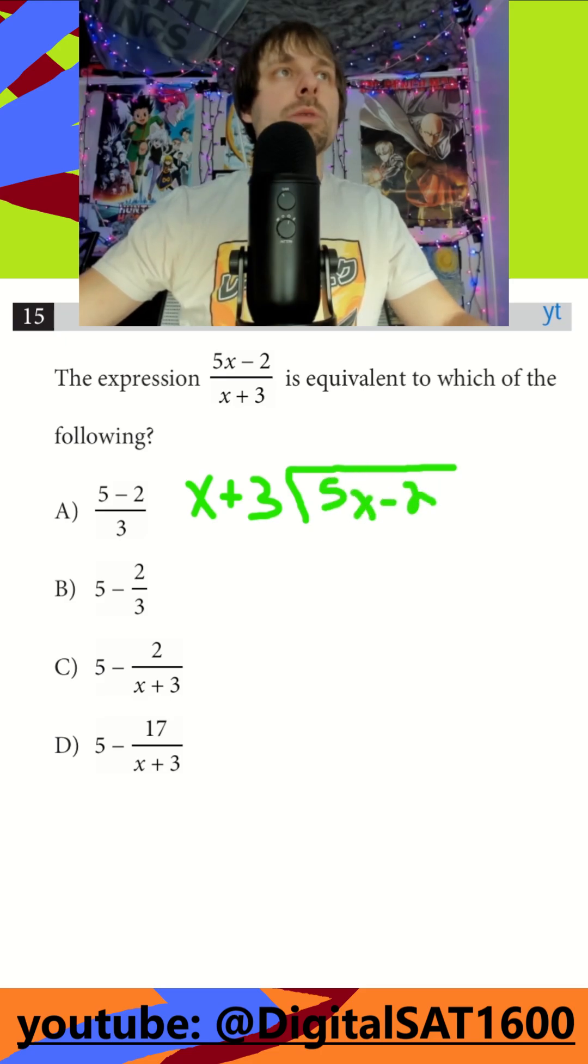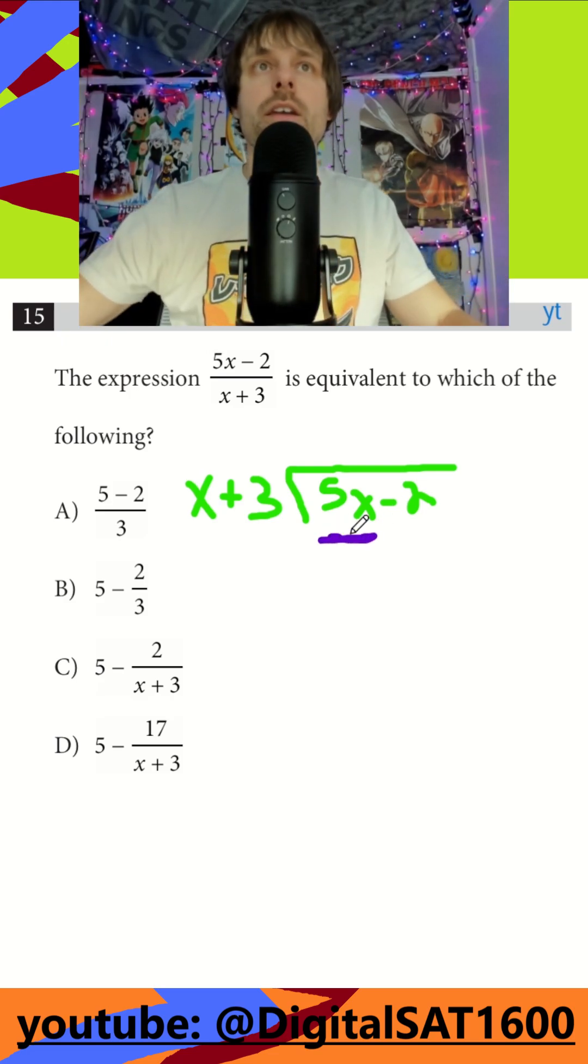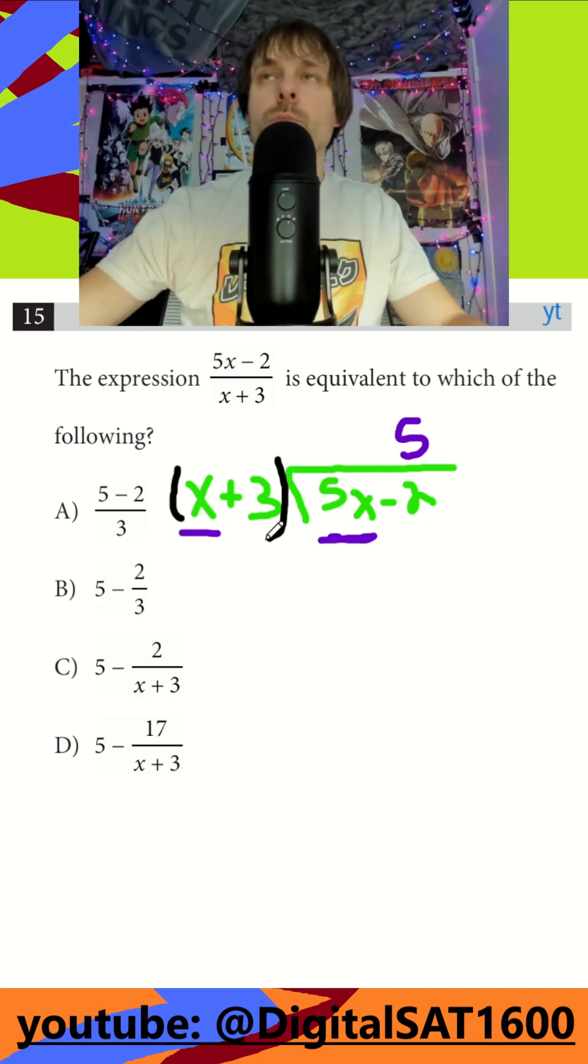And what we want to do is we want to try to match this term. You're always trying to match your biggest x term. So to match that, we're only at x, so I would need to multiply, and I always try to organize it like my numbers above my numbers. I would need to multiply by 5 to get a 5x there. So when I do that, and I have to make sure to distribute, so I throw parentheses around this, I would get 5x plus 15.